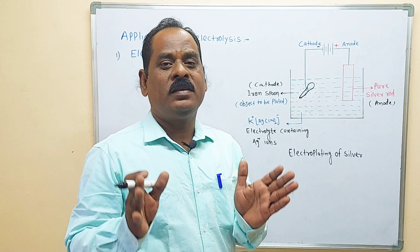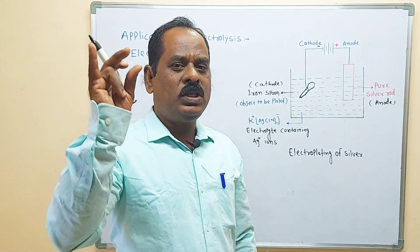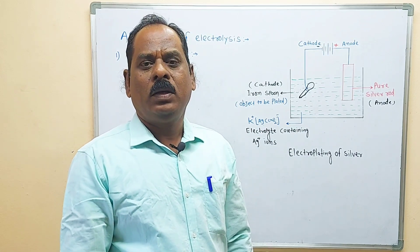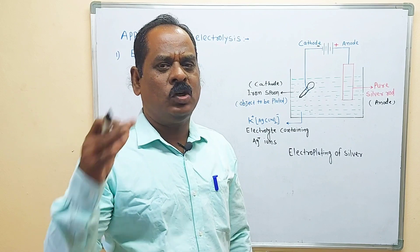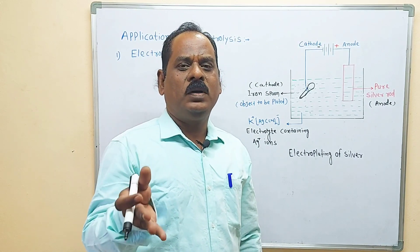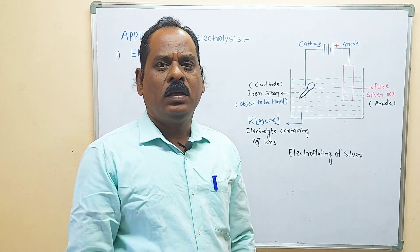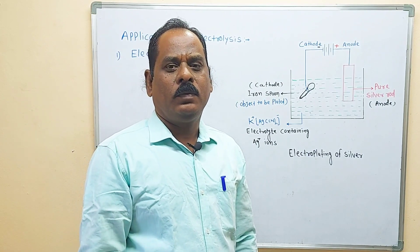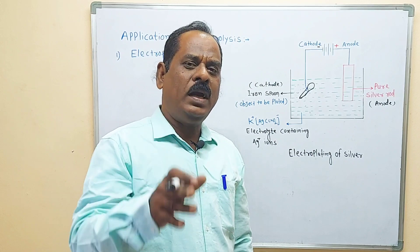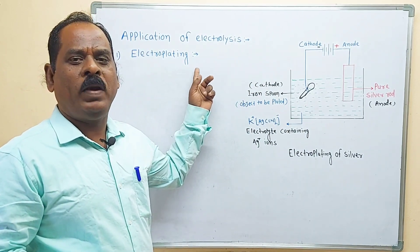First, try to understand the definition of electroplating. In the series of metals, metals are classified into three types: highly reactive metal, moderate reactive metal, and less reactive metal. When a highly reactive metal is exposed to the atmosphere, corrosion takes place. The constituents present in the atmosphere react with the highly reactive metal. For the prevention of this, they are coated with less reactive metals by the electrolysis process — this is called electroplating.